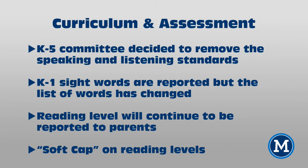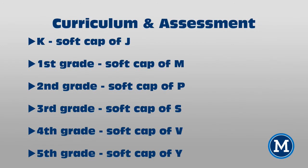For reading level, we decided that each student's reading level will be reported K-5 to parents. However, we are implementing what is called a soft cap for reading levels when it comes to instruction and assessment. This soft cap will be the end-of-year reading level for the grade above your grade. So for kindergarten, there will be a soft cap of J; first grade, M; second grade, P; third grade, S; fourth grade, V; and fifth grade, Y.